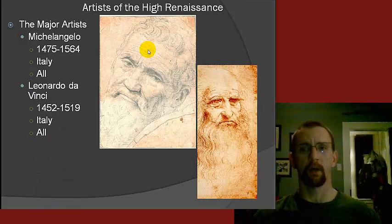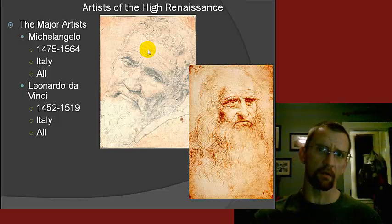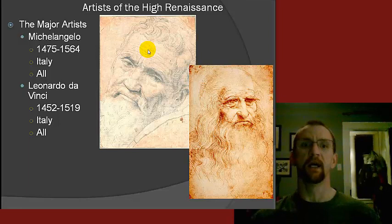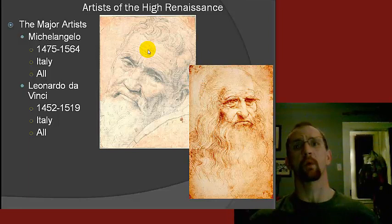Michelangelo Buonarroti lived from 1475 to 1564, didn't really have any one single city he lived in, and the medium he preferred was all of them. The other one is someone you've all heard of in all sorts of different contexts — that's Leonardo da Vinci, born in 1452, died in 1519, worked all over Italy and throughout Europe, and was also really well known for all mediums. Leonardo is your stereotypical Renaissance man.